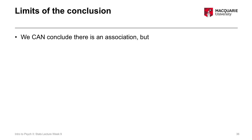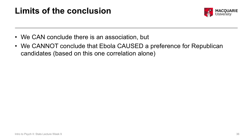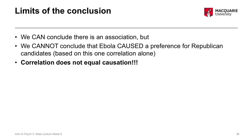While we can definitely conclude that there is an association — a relatively strong correlation between these two variables — what we absolutely cannot do is conclude that Ebola searches caused a preference for Republican candidates, that voting preferences were more towards Republican candidates because of the interest in Ebola or the global salience of the Ebola virus. We definitely cannot conclude that based on this specific correlation. The take-home message is that correlation definitely does not equal causation. Just because two things are associated or co-occur does not mean that one causes the other.